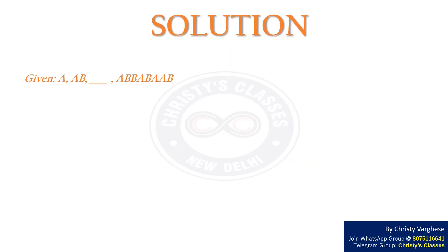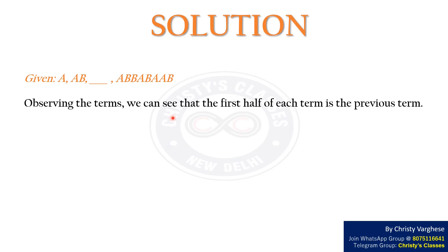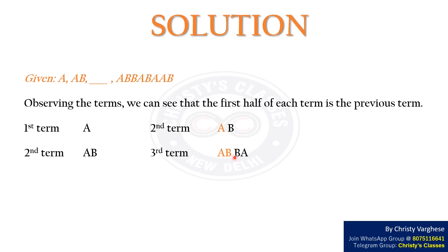Solution: The given sequence is AAB, ABB, ABAB, ABAAB. Observing the terms, we can see that the first half of each term is the previous term. The second term is AB and its first half A is the first term. The third term is ABBA and its first half AB makes the second term.